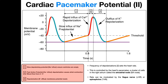Then we get repolarization: those calcium channels are going to close and potassium channels are going to open. When potassium channels open, remember potassium doesn't influx — it effluxes. It moves out of the cell, making the inside of the cell more negative, and that brings the membrane potential back down. But really, the cell is never at rest — it's what we call an unstable membrane potential.